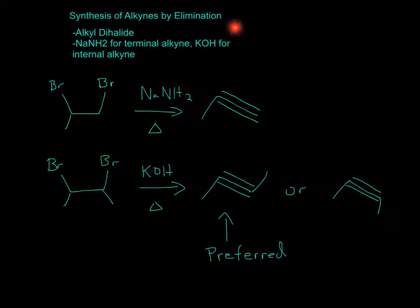For the synthesis of alkynes by elimination, you can have a dihalide. And if it has a hydrogen attached to it, then it would be a terminal alkyne that will be formed. And if you want an internal alkyne, then it would have to have not a hydrogen, but a carbon here.